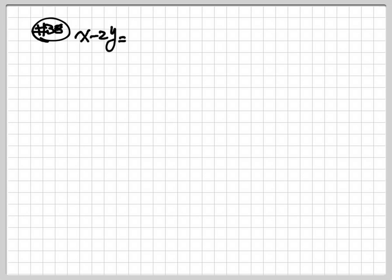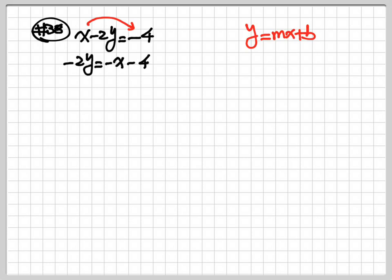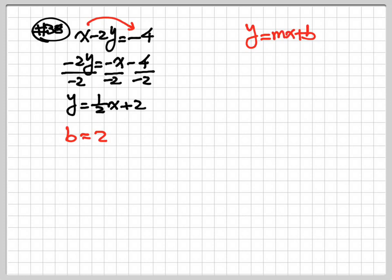Here we have x minus 2y is equal to negative 4. Again, make sure we put everything into the slope-intercept form, y equal to mx plus b. We're going to move the x to the other side of the equation. So we have negative 2y is equal to negative x minus 4. After that, we want y by itself, so divide everything by negative 2. So my y is equal to 1 half x plus 2 — negative and negative become positive. b is the number after the x, which is 2. Slope m is the number in front of the x, which is 1 half.